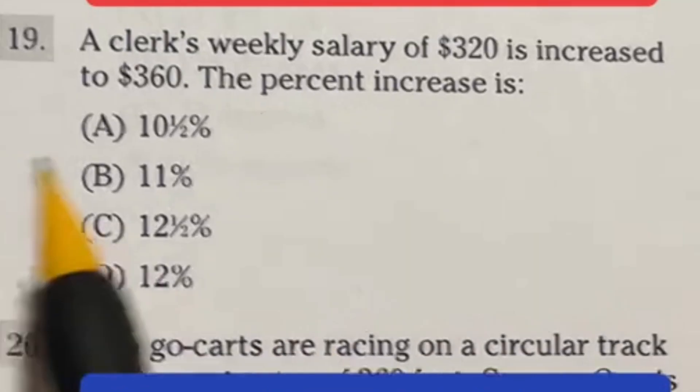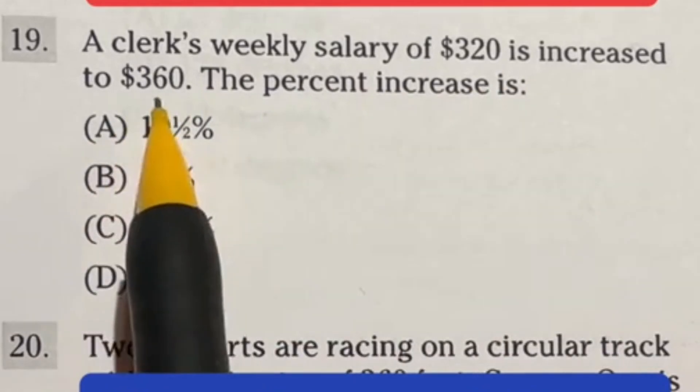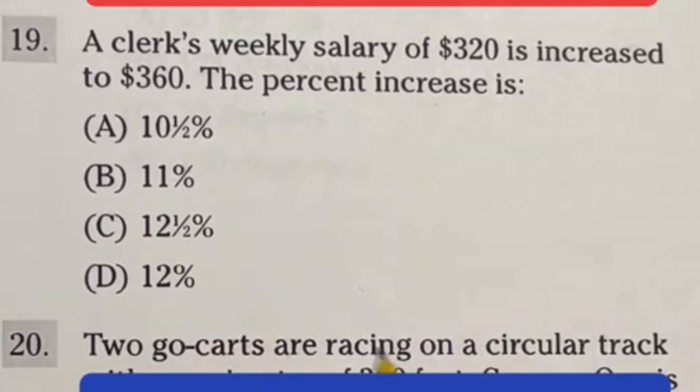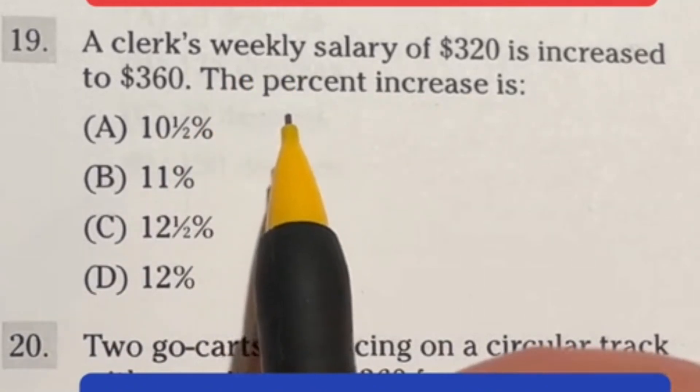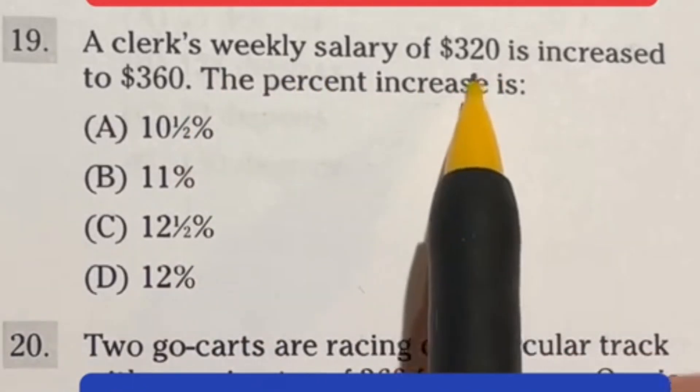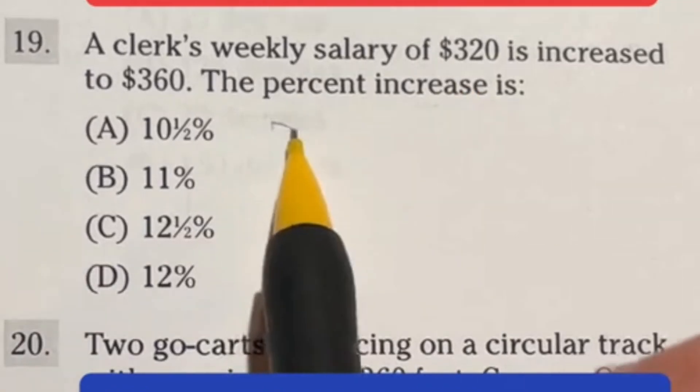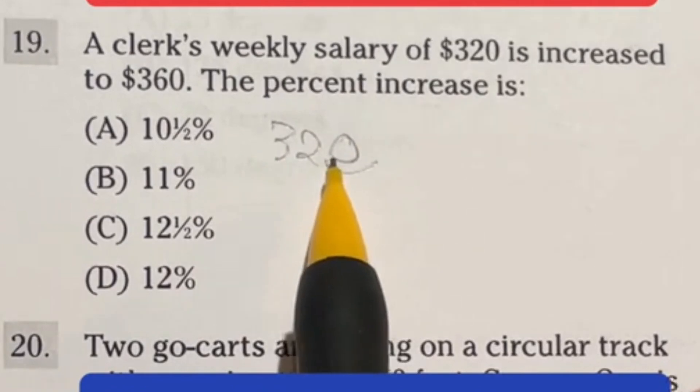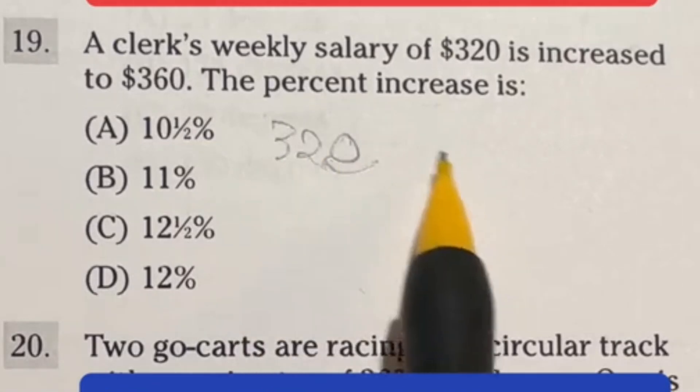Let's talk about a different way of doing number 19. It says a clerk's weekly salary of $320 is increased to $360. The percent increase is what? You could do the typical math, but here's how I'm going to do it. I'm going to use some quick mental math steps. This $320 is our base value, and I know right off the bat that 10% is just moving the decimal place one time to the left. So 10% of this guy is going to be $32.